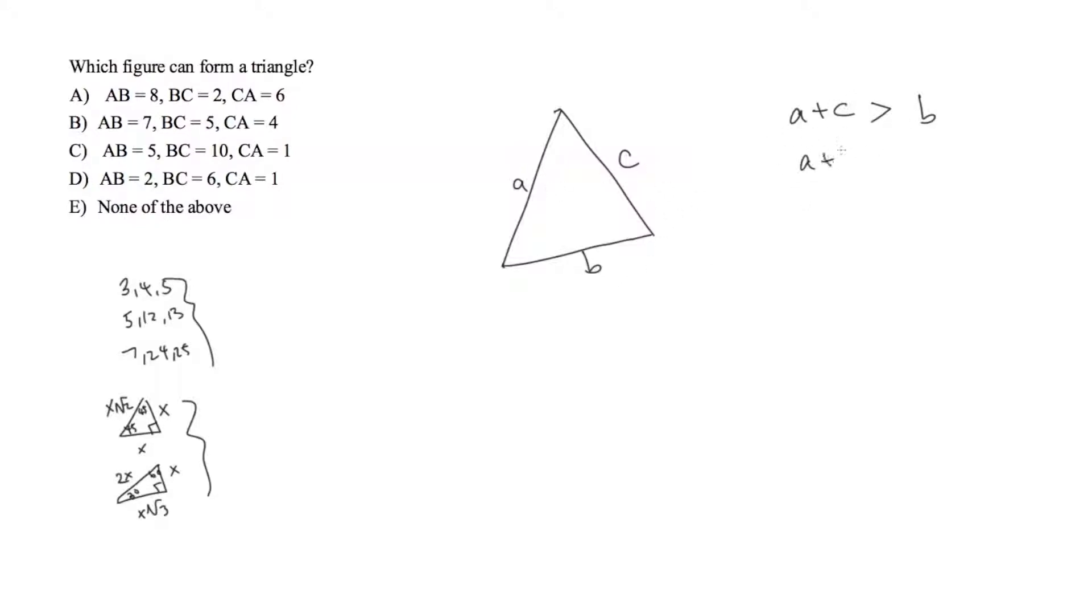We can also do a plus b has to be greater than c. You can also do b plus c has to be greater than a. So as you can see it doesn't really matter what two sides you pick just so long as when you add two random sides they're greater than the third.